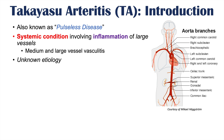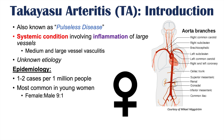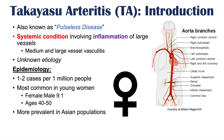This condition is not well understood — it has an unknown etiology, so the cause is not entirely clear. Epidemiologically, it is a rare condition, affecting one to two in one million people. It's most common in young women, with females outnumbering males approximately nine to one, typically presenting around ages 40 to 50, and is more prevalent in Asian populations.